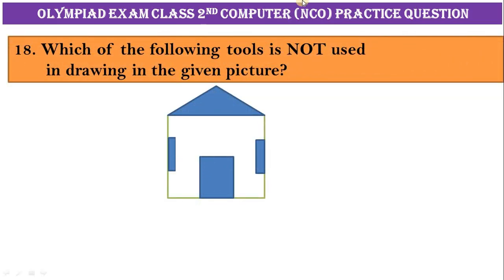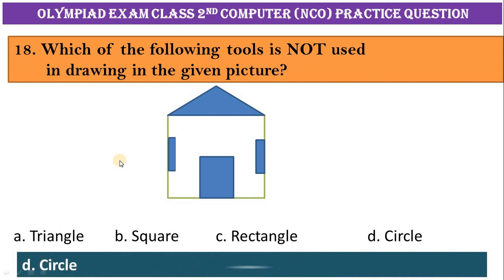Question nineteen: which of the following tools is not used in drawing in the given picture? Triangle, square, rectangle, circle. Correct answer is option T, circle.